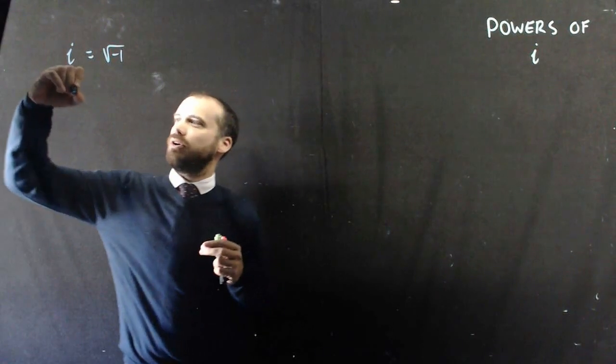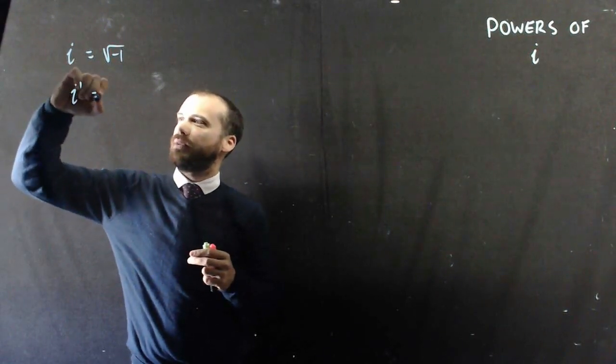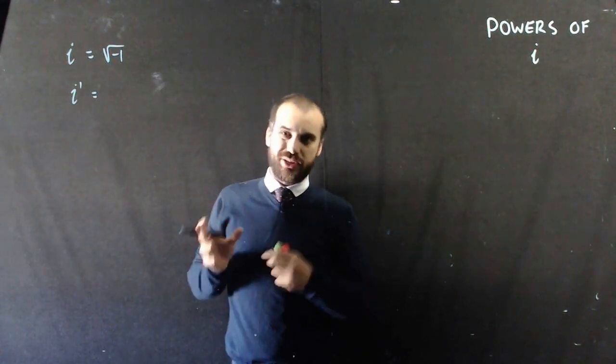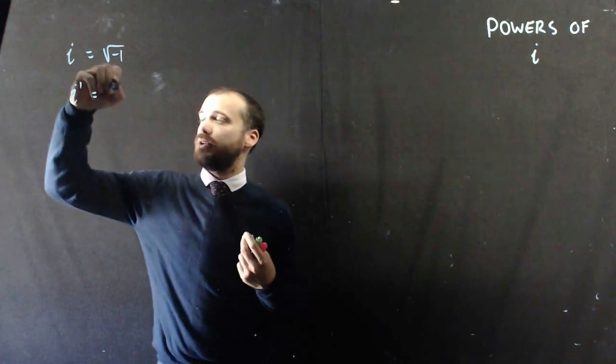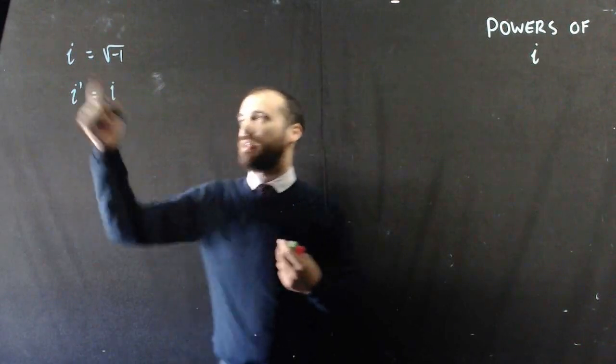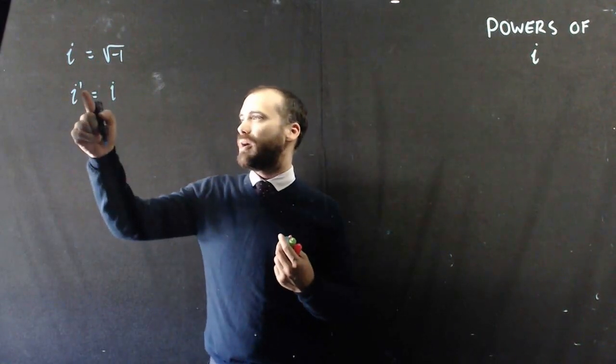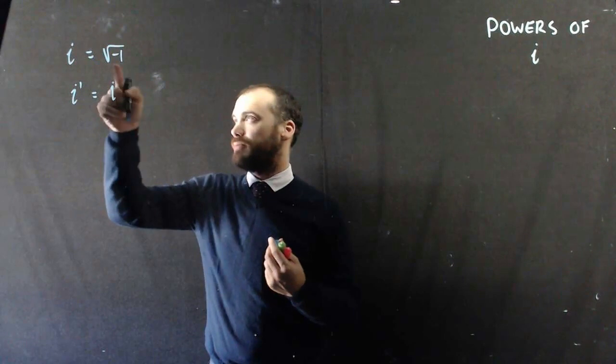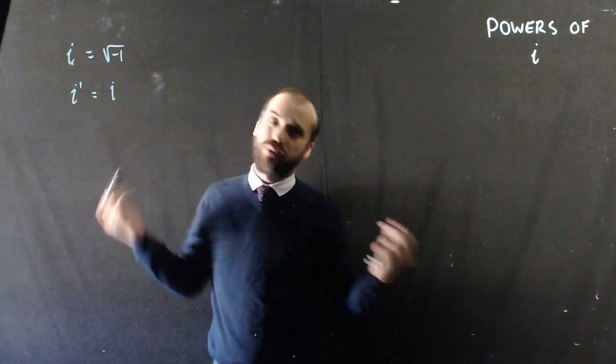All right, let's look at i to the power of 1. Well, i to the power of 1 is just i. So i to the power of 1, pretty straightforward, it's i. I know that seems strange. I'm saying i to the power of 1 is the same as that, which is the same as that. So i to the power of 1 is i.